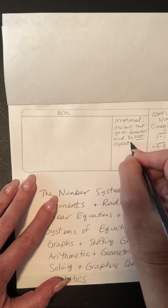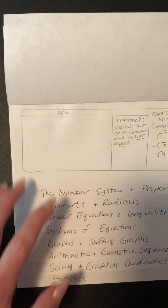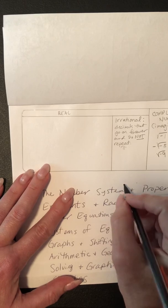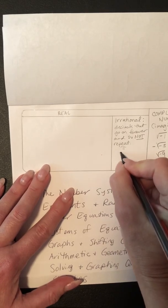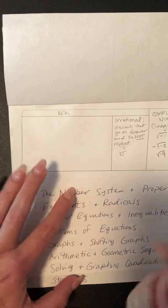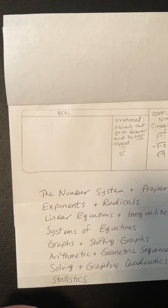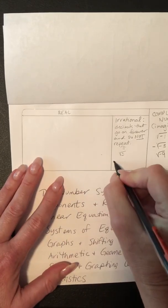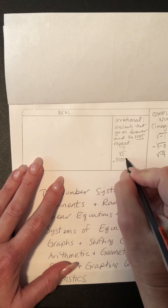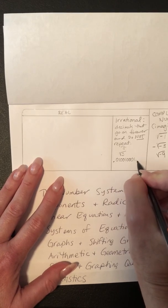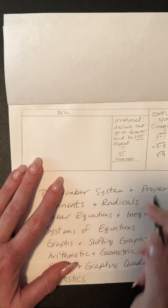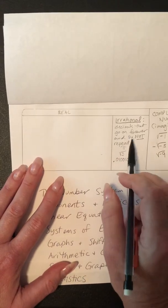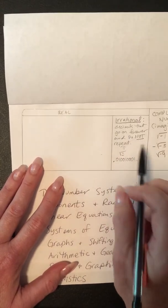The most famous irrational number is pi. The square root of 3 is also irrational — put it in a calculator and you get a long decimal that goes on forever and never repeats. A number can have a pattern like 0.01001001001... but if you can't represent it with a repeating bar, it's irrational. If you can draw it with a bar, it's rational.